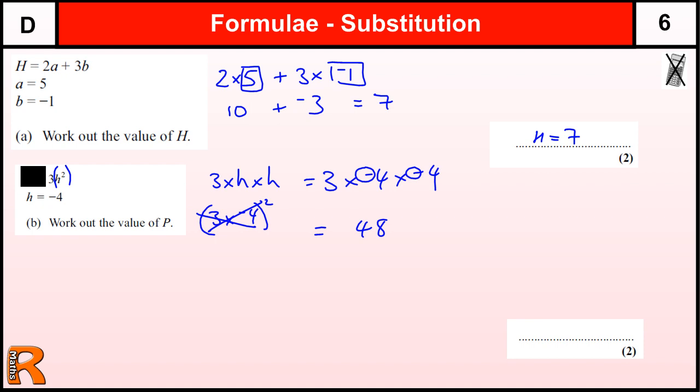If there's an even number of negatives, the answer's positive. So we just leave it as 48. If there was an odd number of negatives, say three negatives, then the answer would be negative. But it's because there's an even number, they cancel out, and that gives us a positive answer.